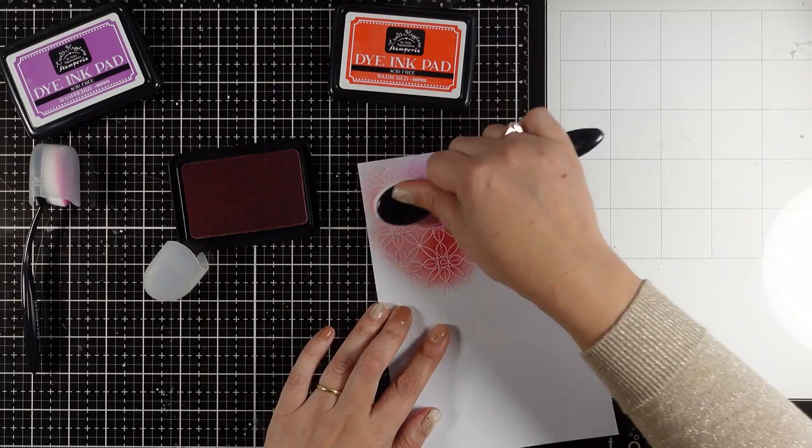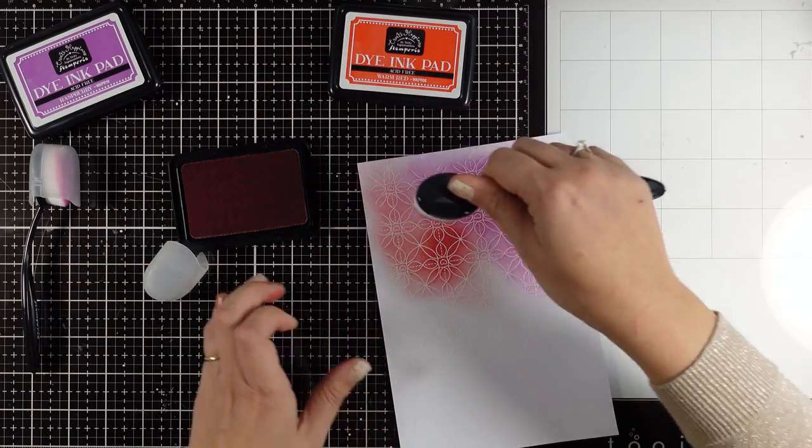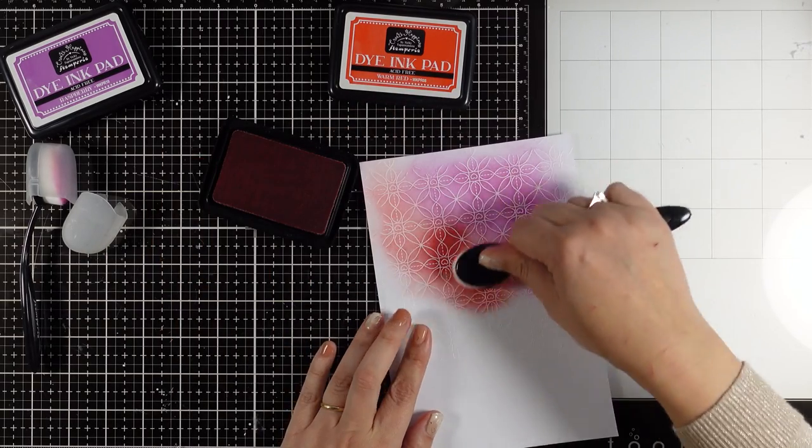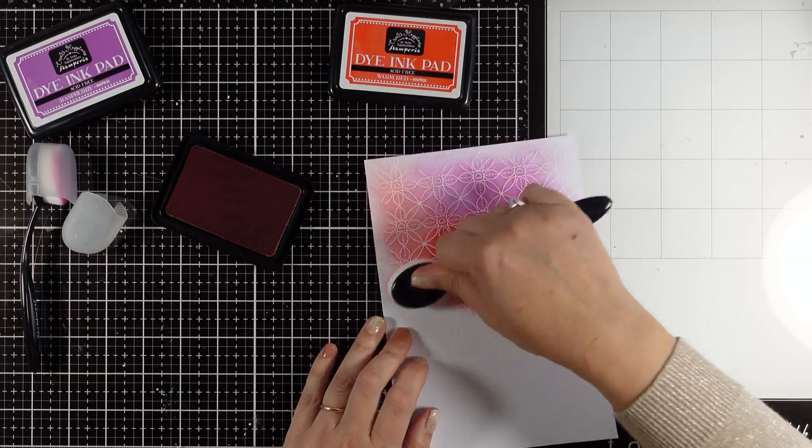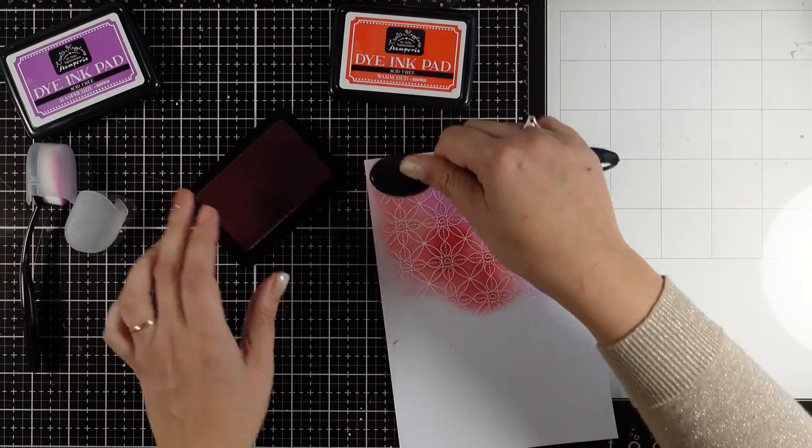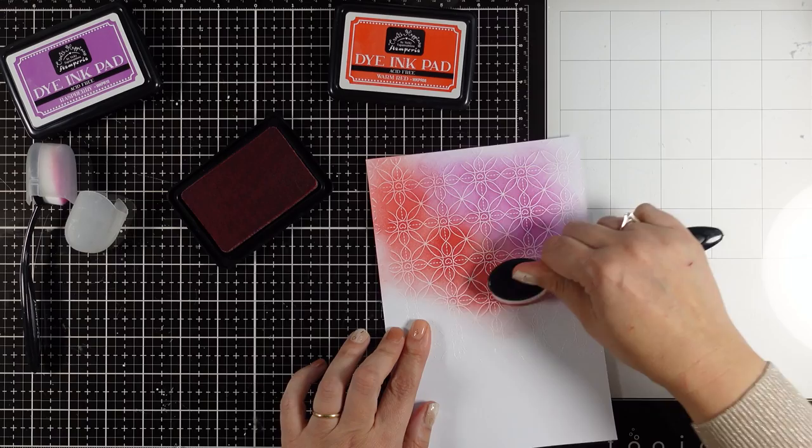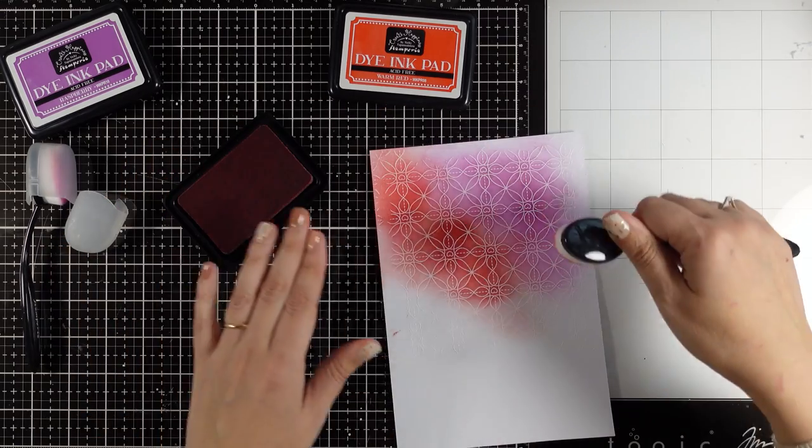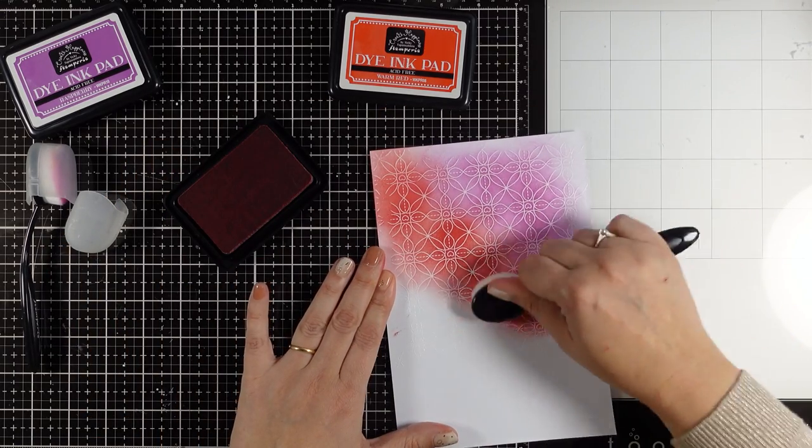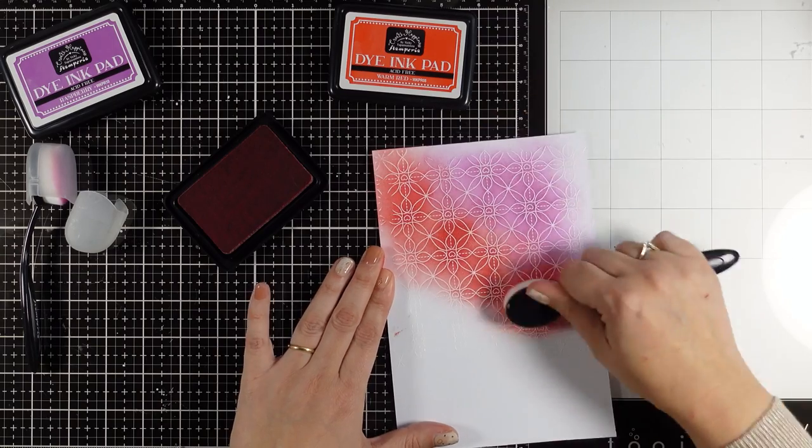Now I've moved on to another new color from my collection, and this is warm red. When it comes to techniques, this is definitely my favorite technique, emboss resist. I mean what's not to love. You combine your stamps, your embossing powders, your blending tools and your inks. So you have everything there.